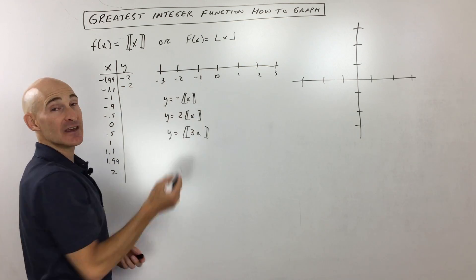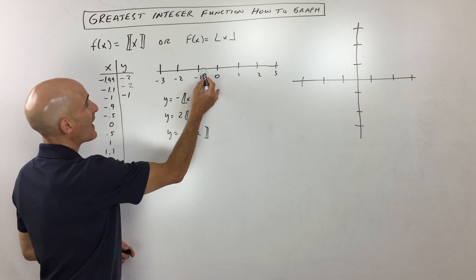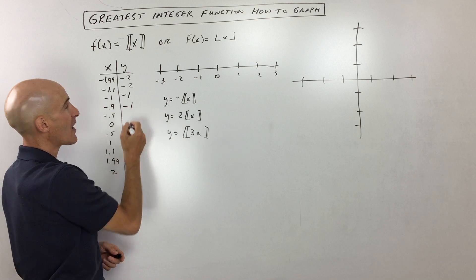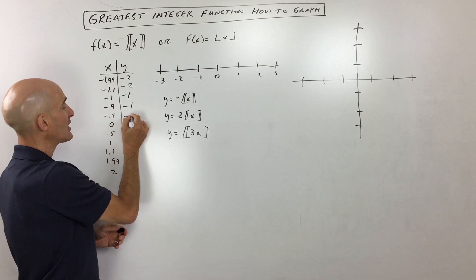Negative 1, we're right on the integer value. So that's still going to stay at negative 1. Negative 0.9 is right here. You round again to the left. You always want to remember you round to the left when you're doing this greatest integer function. Negative 0.5, you're here. Again, you're rounding down to negative 1.